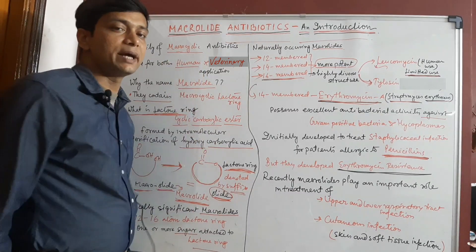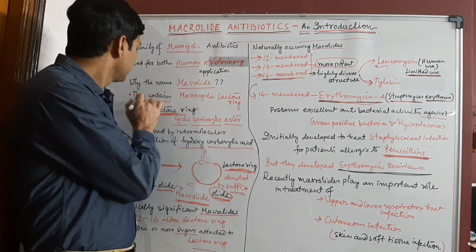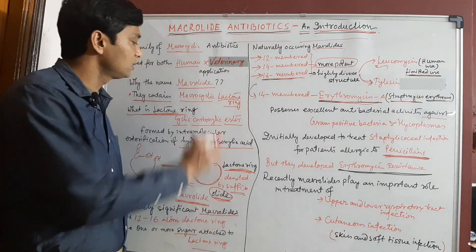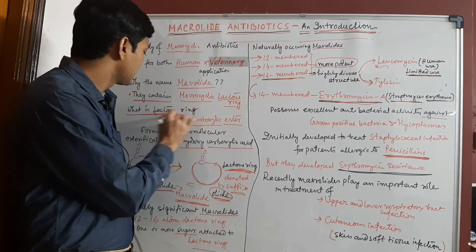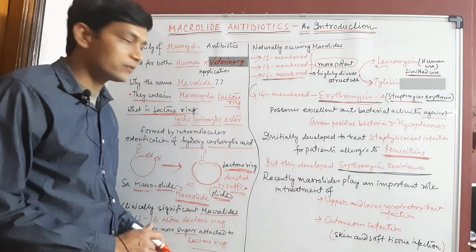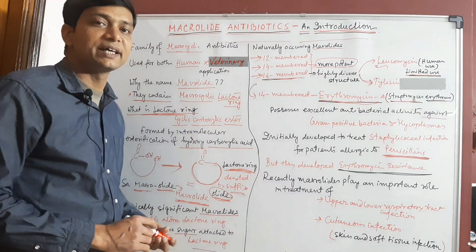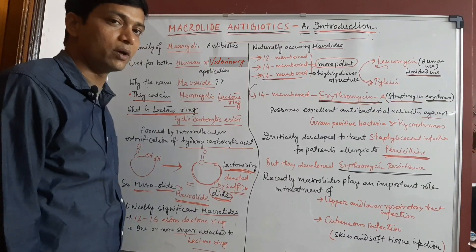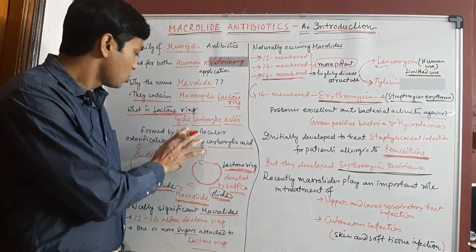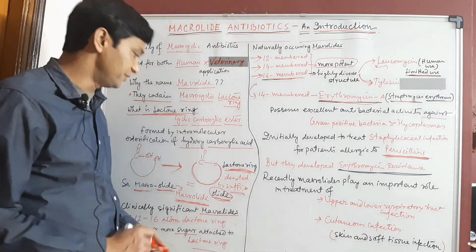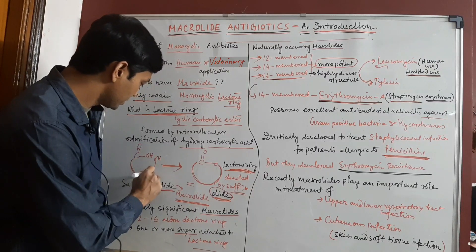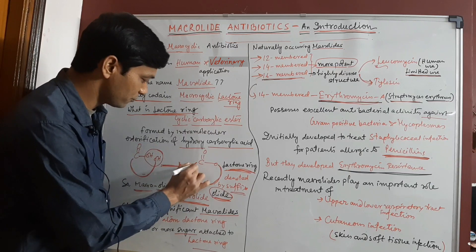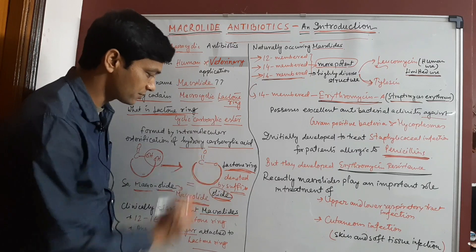The name 'macrolide' is given to these antibiotics because they contain a macrocyclic lactone ring within their chemical structure. A lactone ring refers to a cyclic carboxylic ester, which is formed by intramolecular esterification of the corresponding hydroxy carboxylic acid. This is the hydroxy carboxylic acid, and when intramolecular esterification occurs, it forms this type of cyclic ester.